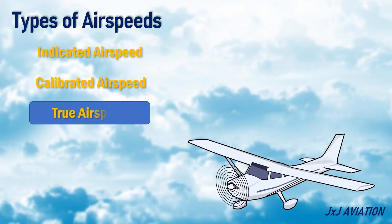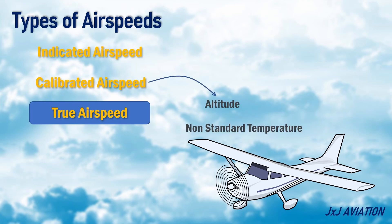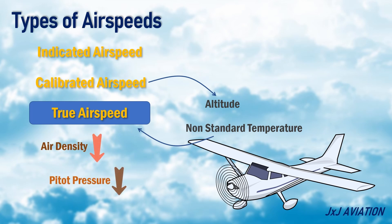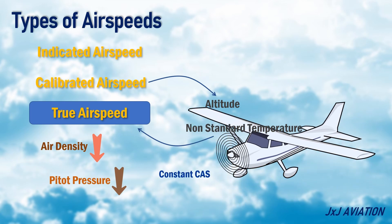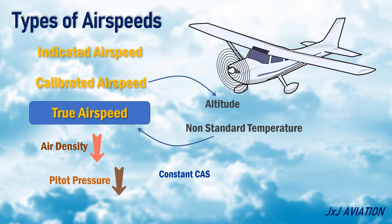True airspeed: calibrated airspeed corrected for altitude and non-standard temperature is true airspeed. The air density decreases with an increase in altitude. The pitot pressure reduces since less air enters the pitot probe. For a constant calibrated airspeed, as the altitude increases, the true airspeed increases.